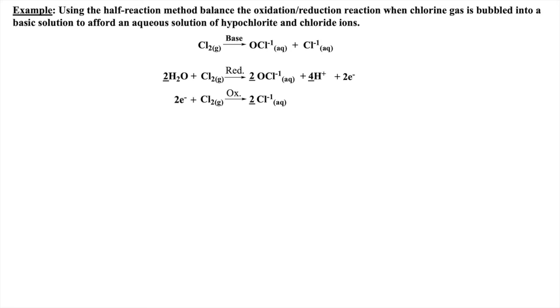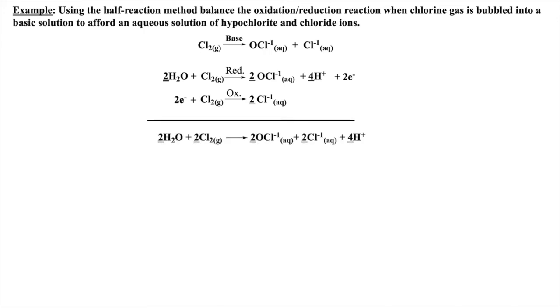Before the two half reactions can be added, we need to ensure that electrons will cancel. In this example, both electrons will cancel, so I can bring both half reactions back together.